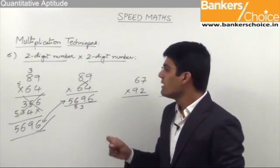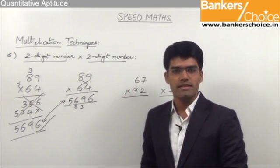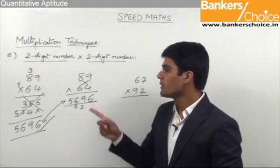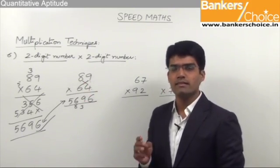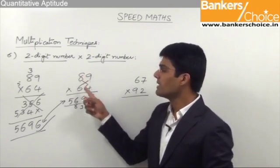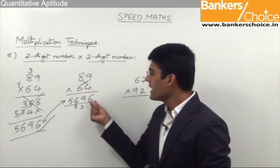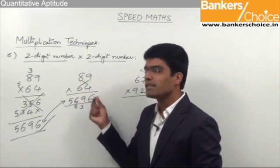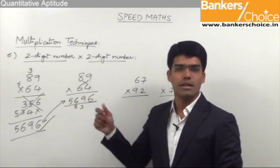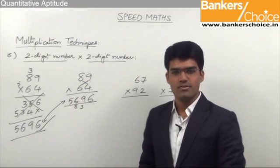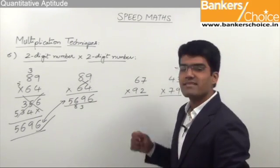The three simple steps are: first, multiply both the unit spaces; second, cross multiply the unit spaces with 10 spaces; and the third step is multiplication of 10 spaces. In each step, we take only one digit in the answer and the other digit gets carried forward until we obtain the last step. Let us take a few more examples to understand this.